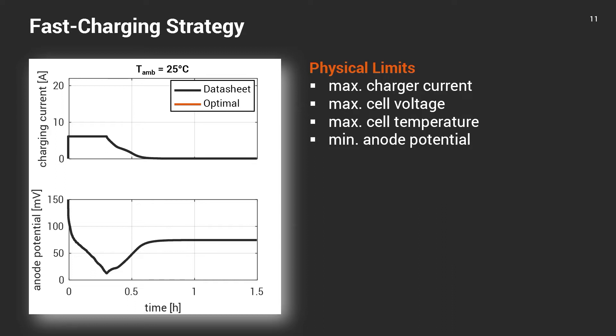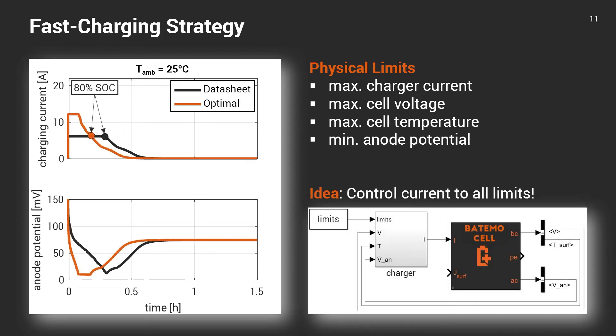So how can we derive a charging algorithm or a charging current that drives the current precisely always at one of those limits? It's fairly simple. You just create a charging algorithm that knows the limits. It knows the voltage, the temperature and the anode surface potential as calculated by a validated parameterized physical model. The controller then ensures that the charging current is always as high as possible while ensuring that none of these limits is exceeded.